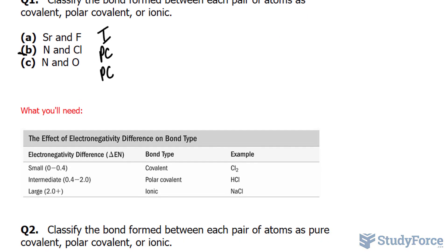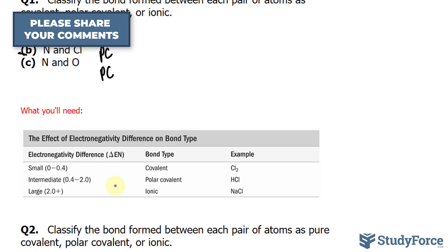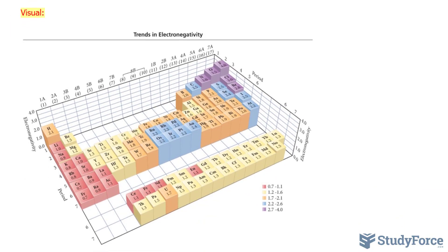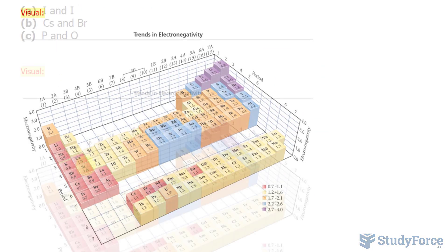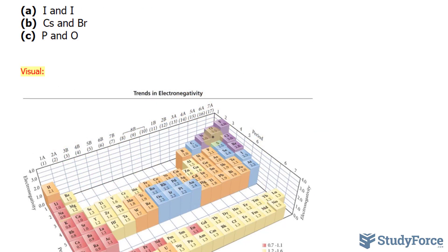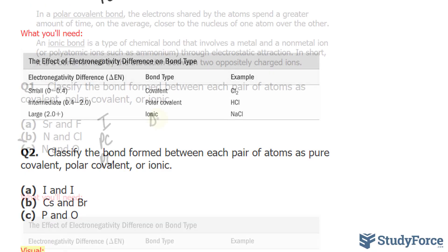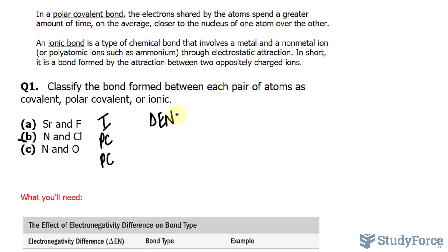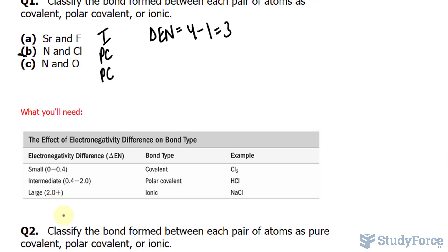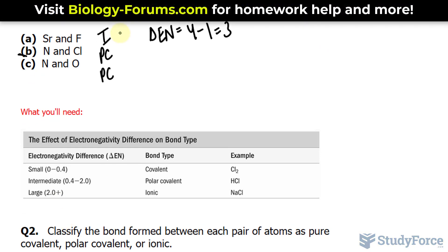Now to be sure if what I've chosen is correct, I'm going to use the electronegativity chart below and calculate the difference of electronegativity, denoted by delta En, for each case. Starting with strontium and fluorine, strontium's electronegativity is one and fluorine's is four. Four minus one is three, so delta En is three. Looking at the chart, that's larger than two, so this is indeed ionic. Our guess was correct.